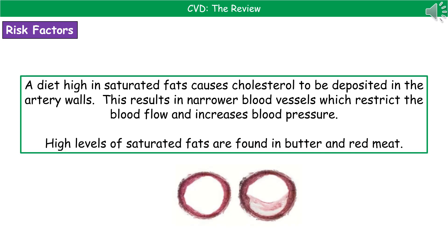The second risk factor is having a diet high in saturated fats. If you eat too many saturated fats, we end up with deposits of cholesterol in the artery walls, which narrows the blood vessels, restricts blood flow, and also increases blood pressure. On the left you have a healthy artery with no restrictions, and on the right you can see it's down to almost half the size due to the deposit of cholesterol at the bottom.